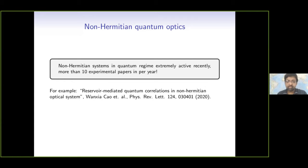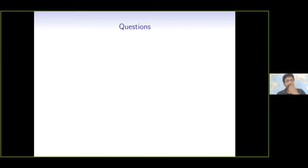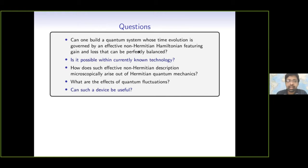However, none of these experiments in the quantum regime feature a gain medium. This brings us to some questions. The main question is: can one build a quantum system whose time evolution is governed by an effective non-Hermitian Hamiltonian featuring a gain and loss that can be perfectly balanced? Is it possible within currently known technology? How does such an effective non-Hermitian description microscopically arise out of Hermitian quantum mechanics? What are the effects of quantum fluctuations? Can such a device be useful?